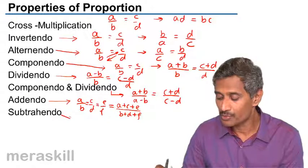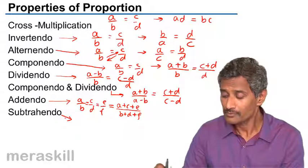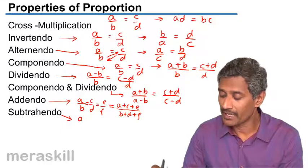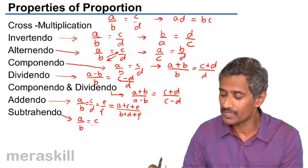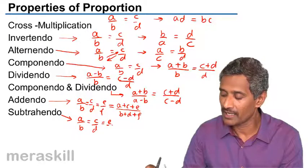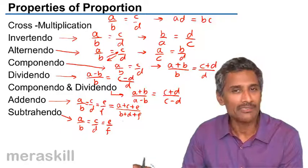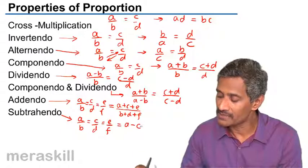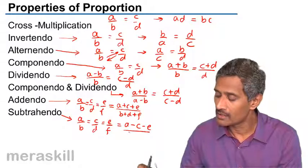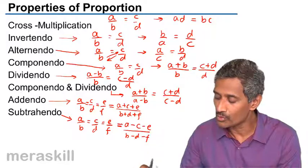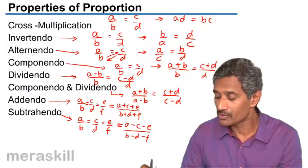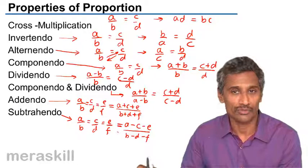We also have subtrahendo. Subtrahendo is just the other way around. That is, if A by B is equal to C by D is equal to E by F is equal to G by H and so on. Even if you subtract: A minus C minus E upon B minus D minus F, these ratios are equal. So this new ratio obtained is also equal to each of the original ratios.